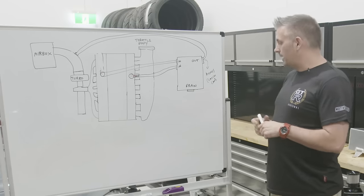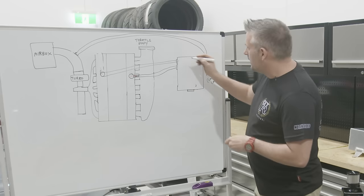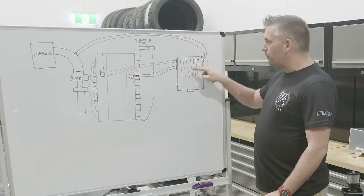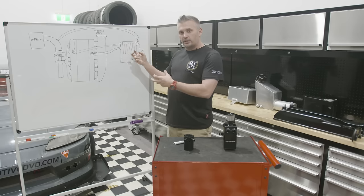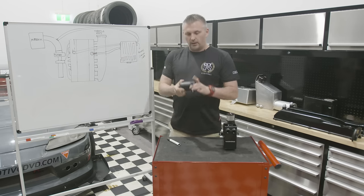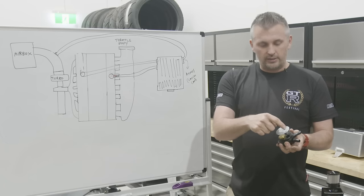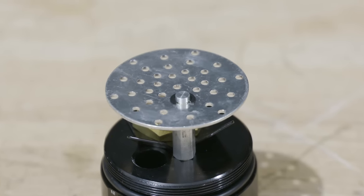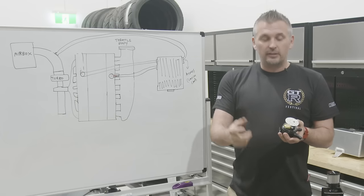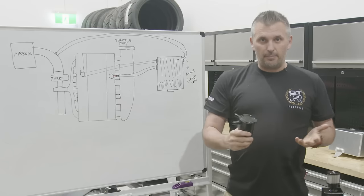Whether it's a catch can or an oil-air separator, they're both trying to do the same thing: separate the oil and the air. They use a series of baffles and metal filters inside. As air runs over a metal surface, the oil attaches to that surface, turns back into a liquid, and collects inside the can. Inside this oil-air separator you can see a disc for the oil to attach to and a metal filter — air can get through but oil vapor hits the filter, turns back into liquid, drops down and gets collected.